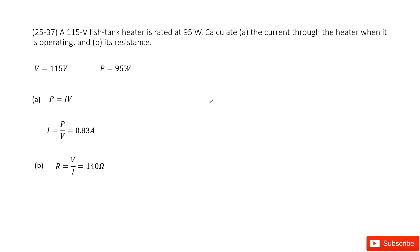You can see there we have a fish tank heater. Its potential difference is given as 115 volts and the power 95 watts. The first part asks to calculate the current through the heater when it is operating.